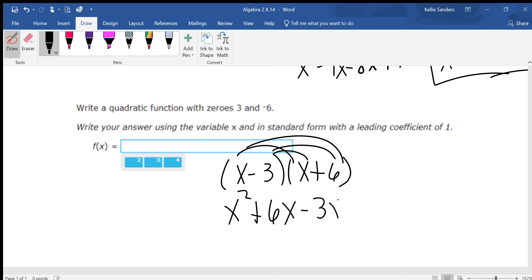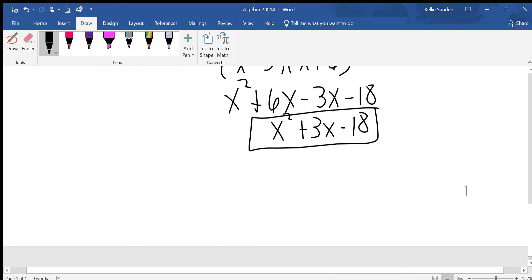We're basically undoing the factoring. It's in factor form, we're figuring out what the problem was before we factored it down.